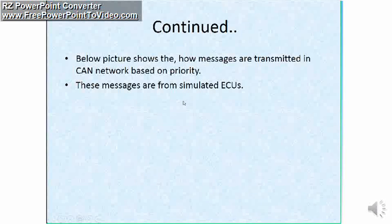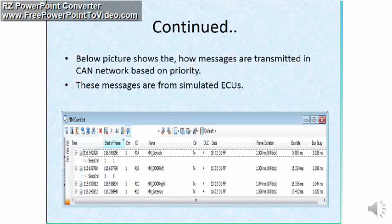Dear friends, here I have a picture that shows how messages are transmitted in a CAN network based on priority. These messages are taken from simulated network. So here you can see 41A, 41B, 41C, 41D. They are transmitted based on their priority. That means 41A is the high priority message compared to 41B, C and D. So similarly 41B is the high priority message compared to 41C and 41D.